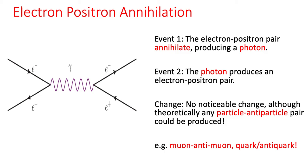If you're looking at this before and after, on the left and the right-hand side of this diagram, there's nothing very interesting. There's no noticeable change because we've got an electron and an anti-electron colliding, annihilating, producing an electron and anti-electron. The point here is that theoretically, any particle or antiparticle pair could be produced.